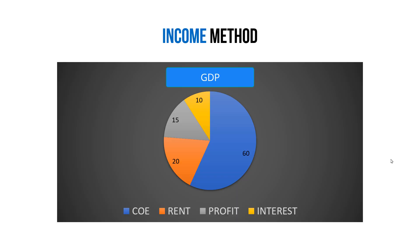For example, in a pie chart of national income: compensation of employees may constitute 60%, rent 20%, profit 15%, and interest 10%. When we sum all these components, we arrive at GDP.